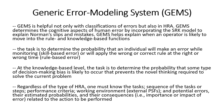Regardless of the type of HRA, one must know the task sequence and steps, the performance criteria, the working environment and potential errors with estimated probabilities, and the consequences related to the action to be performed. When using GEMS with HRA, we have to know how the task was done, the sequence of task performance, the criteria for performance, the environment-related factors, what kind of errors occur and the probabilities, and after the error what was the consequence — whether it was an accident or a near miss. All of these combined give some idea of what is going on in the mind of the operator and the cognitive basis of error.